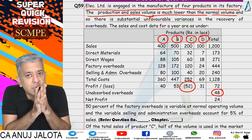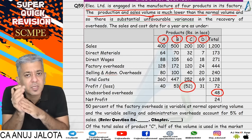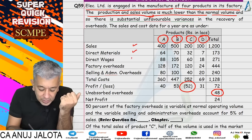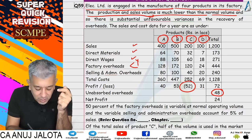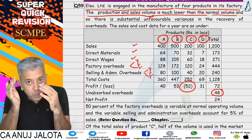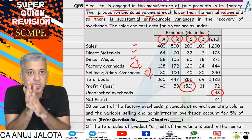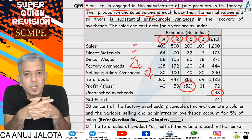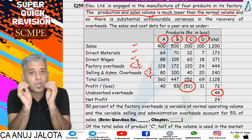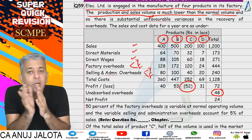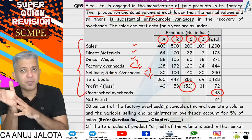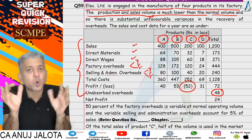In reality C was not loss-making, lekin unlog ki statement ke hisab se wo loss-making lag raha tha. Toh wo log saare ke saare ways nikal rahe the ki C ko kaise band kiya jaye aur apna jo profit hai kaise up kiya jaye. Sales, direct material, direct wages, factory overhead jiska do part hona chahiye tha — variable aur fixed — selling and administration jiska bhi do part hona chahiye tha. Hum logon ne saare bifurcations karke pehle apna normal statement banaya: sales minus variable cost gives contribution, less fixed cost gives profit. Yahan par fixed cost apportion hua hai, toh all these statements are wrong.